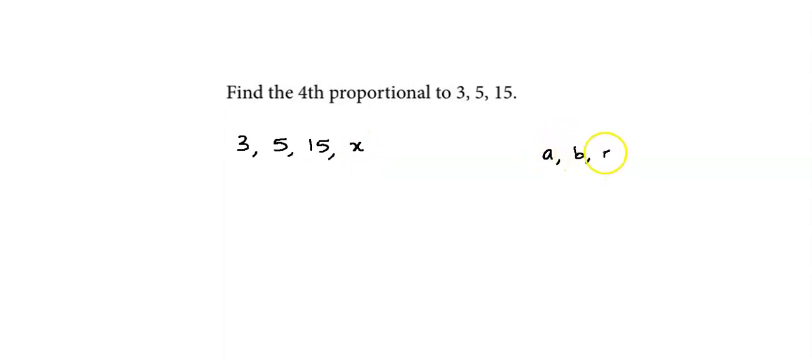We know that if a, b, c, d are in proportion, then a upon b is equal to c upon d.